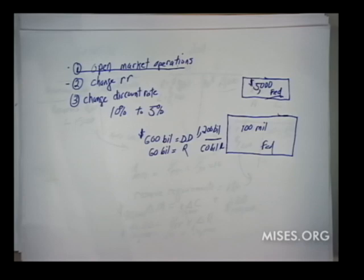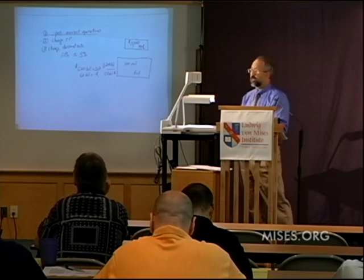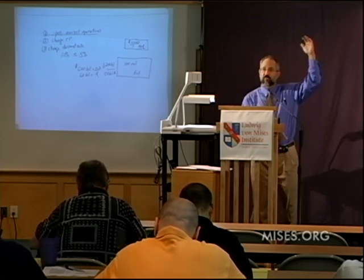If the Fed wants to drain money out of the economy, it goes into the market and sells from its stock of billions of dollars of government bonds built up since 1914. Bond dealers write checks on their banks to pay for them. When those checks go to the Fed, the Fed informs the banks that their reserves have fallen — say by $100 million — and the banks have to begin calling in loans because their reserves are insufficient to back up their checking account money. The money supply shrinks. So when the Fed buys anything, it increases the money supply; when it sells anything, it decreases the money supply. The Fed doesn't have any money of its own, but it's legally empowered to create money out of thin air through open market operations. It can also change the reserve requirement.